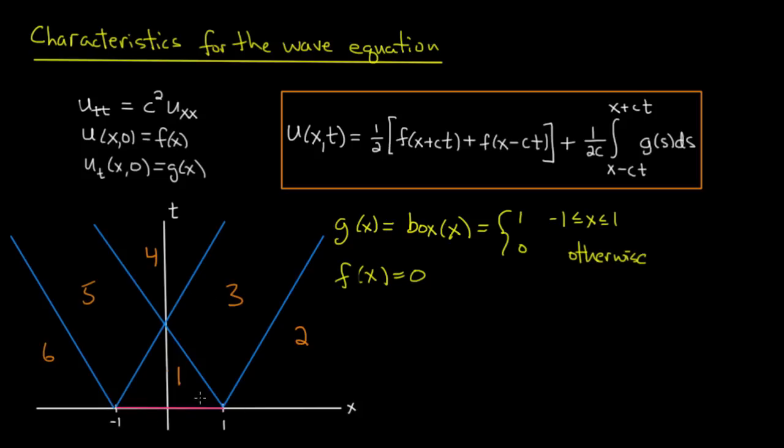So let's compute the value of u in a few of these regions, and figure out how characteristics are working for us. So let's look first at region number 1. If I plop down at a point in region 1, let's call that point x,t, I would trace back to x-ct and x+ct. In order to compute the value of u, I would integrate from x-ct to x+ct the value of 1. So I would get 1/(2c) integral from x-ct up to x+ct 1 ds. And if I compute that out, that comes out to just t.